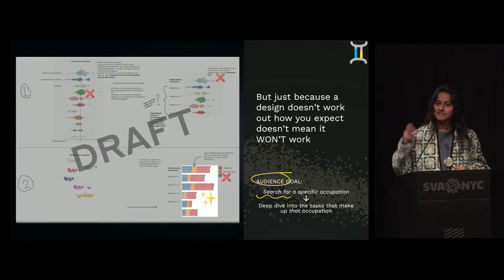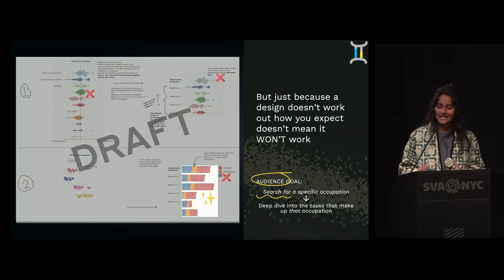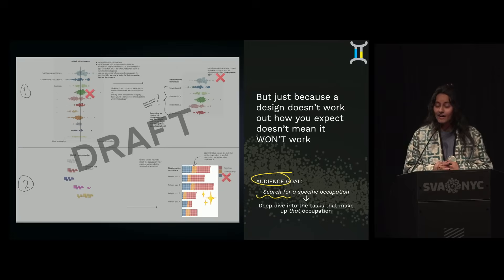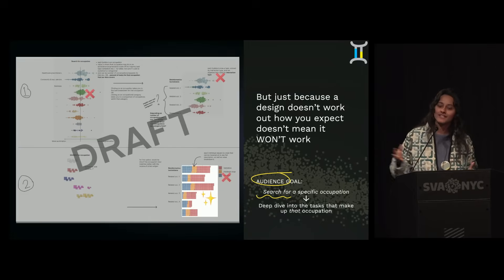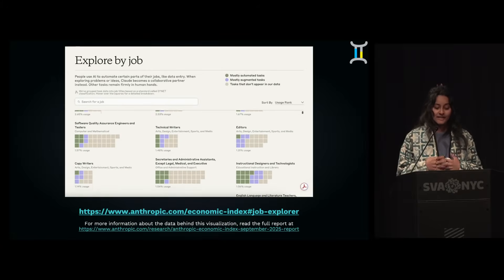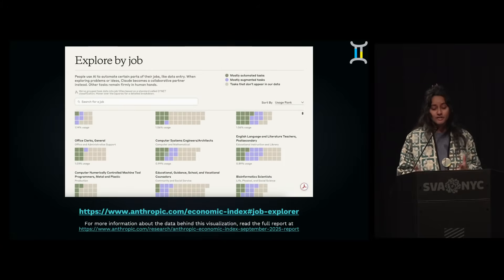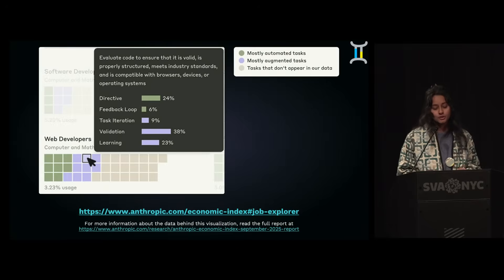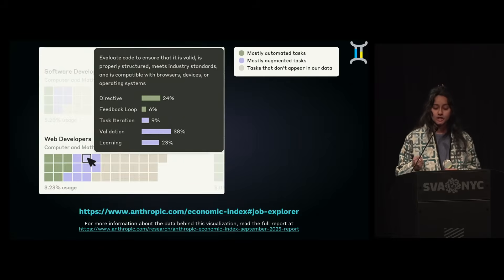Spitballing together about the design and the data with all these different people in the virtual room is what allowed the final visualization to grow from a tiny idea that wasn't going to work. It literally took someone saying, 'I think the color could apply to X instead of Y,' and that changed the whole thing. It brought us to a final design that achieved the goals, was very true to the data, provides an overview of occupations, and is also true to the nuance of the data.